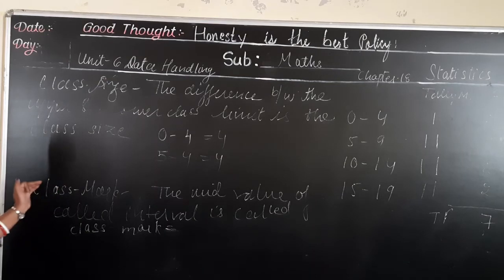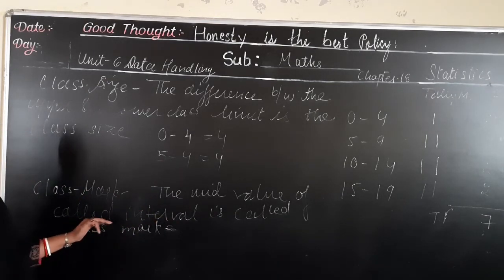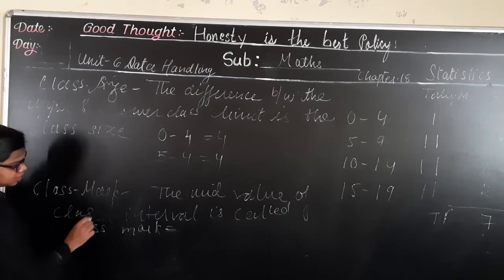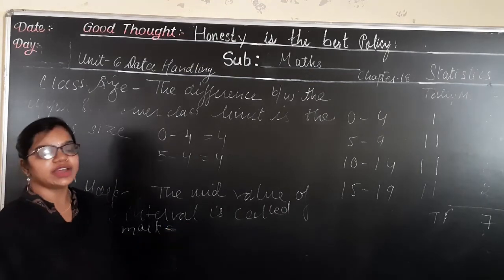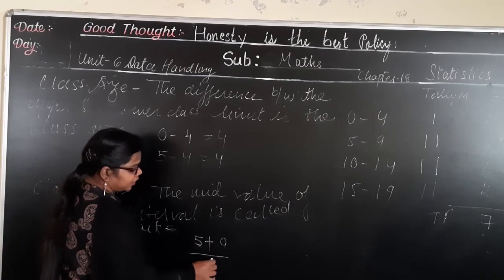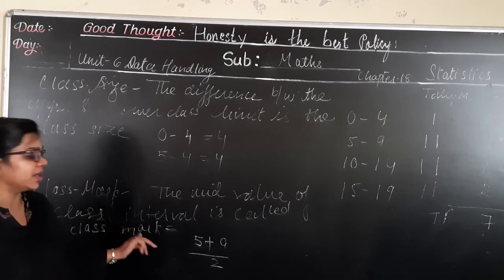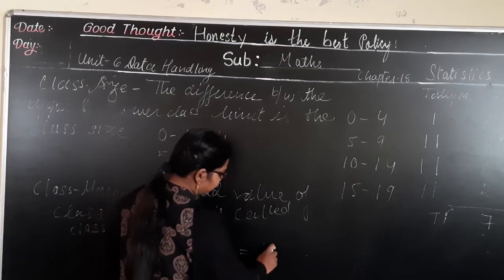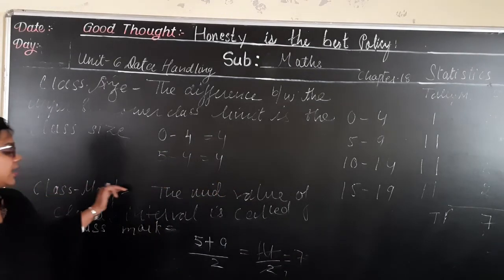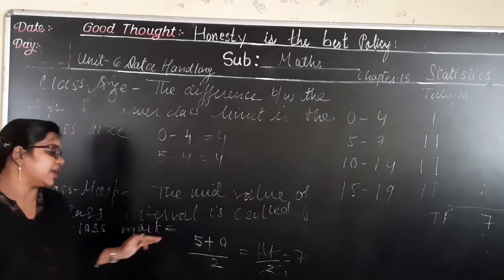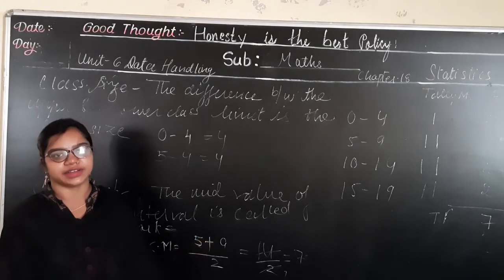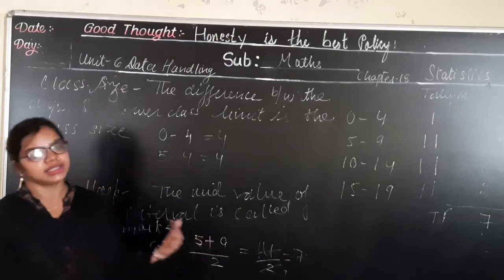Now, class mark. The mid value of a class interval is called its class mark. To find the mid value, suppose the class interval is 5 to 9 — the class mark is (5 + 9) ÷ 2 = 14 ÷ 2 = 7. So the class mark of the interval 5 to 9 is 7. Class mark equals the mid value of the class interval.